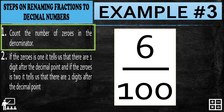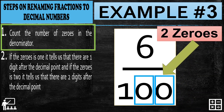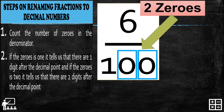Let's try example number 3: 6 over 100. First, count the number of zeros in the denominator. In my example, there are 1 and 2 zeros on my denominator.